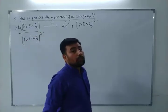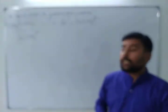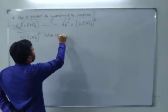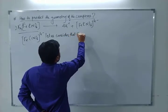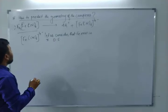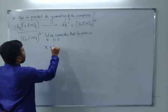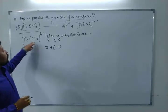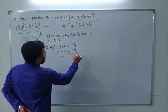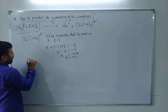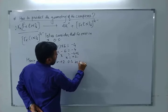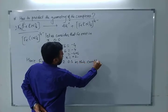First of all, we have to find the oxidation state — in which oxidation state does iron exist in this complex? Let us consider iron exists in x oxidation state. So x + (−1 × 6) = −4, therefore x − 6 = −4, so x = +2. Hence iron exists in +2 oxidation state in this complex.